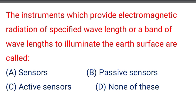Next question: the instrument which provides electromagnetic radiation of a specified wavelength or band of wavelengths to illuminate the earth's surface is called — option A: sensors, option B: passive sensors, option C: active sensors, option D: none of the above. The correct answer is option C: active sensors.